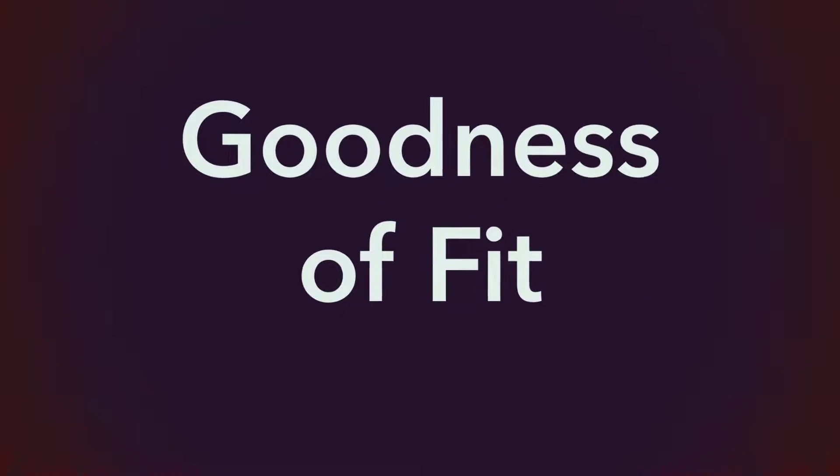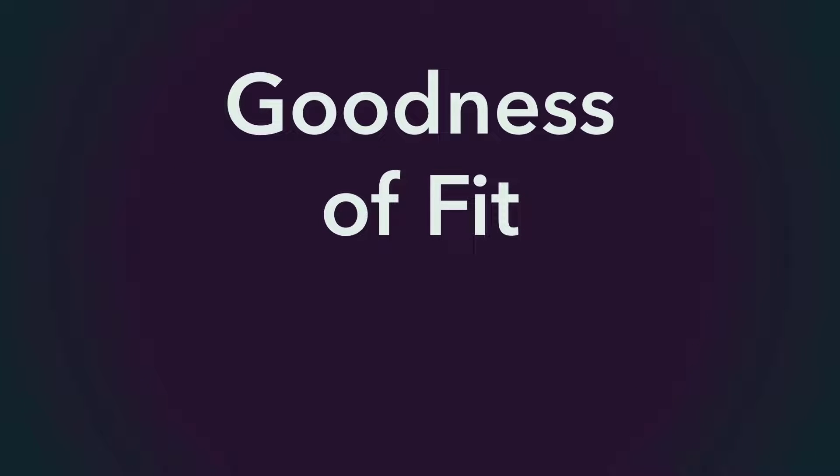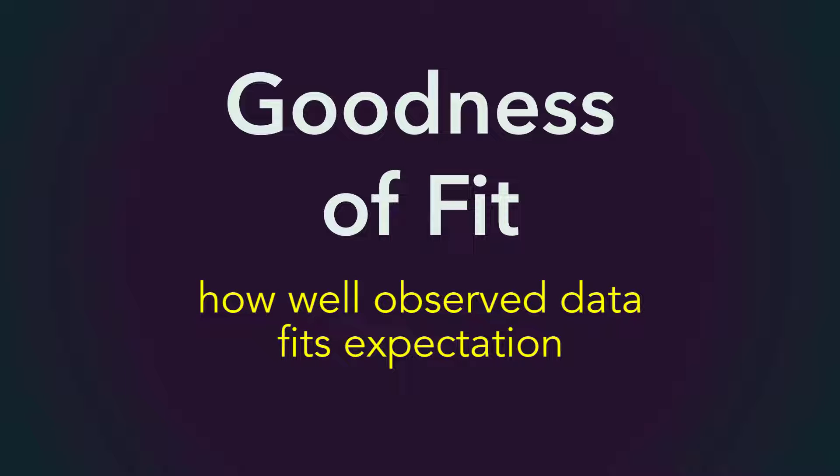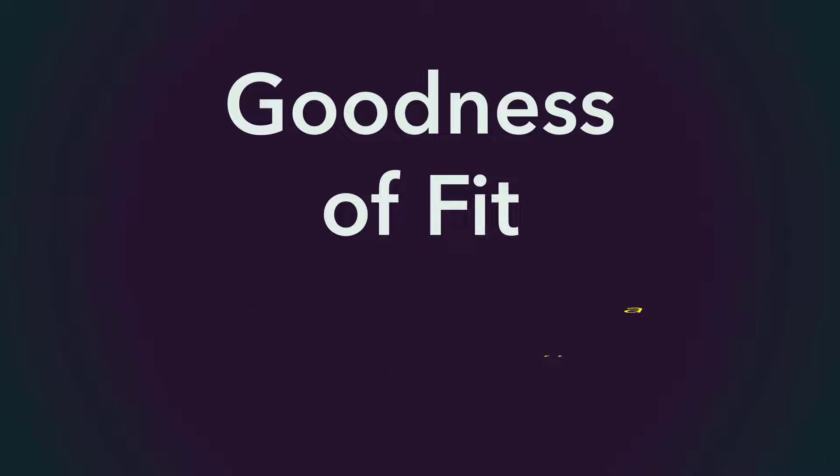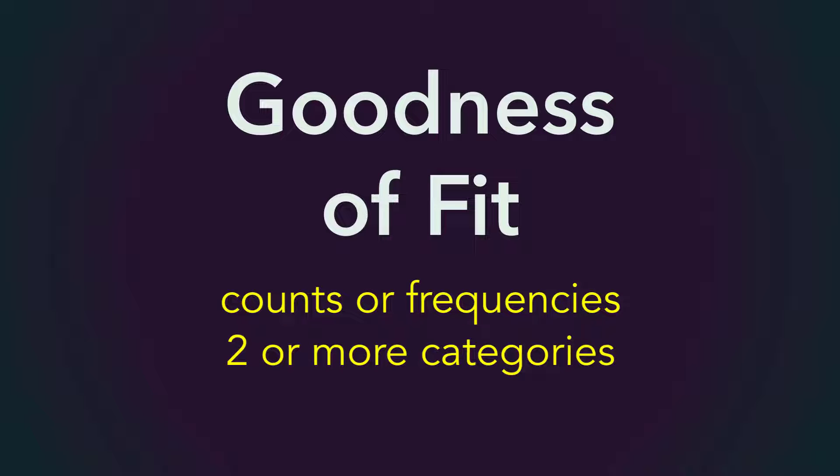In the chi-square goodness-of-fit test, we're determining how well the distribution of experimental or observed data fits the population or expectation. It is employed when dealing with counts or frequencies for a categorical variable with two or more categories, or what is called a multinomial experiment.